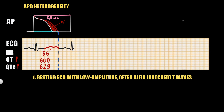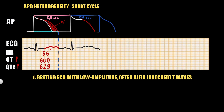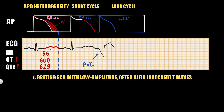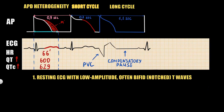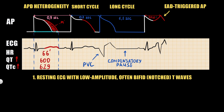Another important ECG feature is the short-long-short cycle length sequence seen before torsades de pointes onset. When a premature ventricular contraction occurs after a regular QRS complex, it designates a short cycle length due to its prematurity, with a coupling interval of 0.7 seconds. After the PVC, a compensatory pause creates a long cycle length of 1.1 seconds. This long cycle prolongs action potential duration in the next complex, which — in the setting of prior prolongation — provokes early afterdepolarization formation. If the EAD is strong enough, it can trigger an action potential, seen on ECG as a short-coupled premature ventricular contraction. A prominent U-wave is visible on ECG just before this short-coupled PVC as a sign of early afterdepolarization.